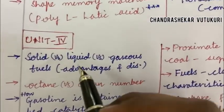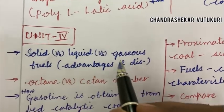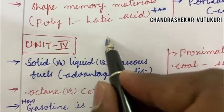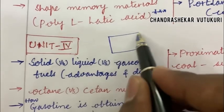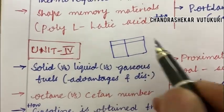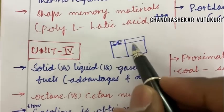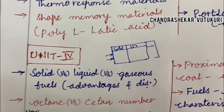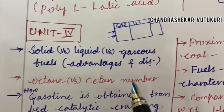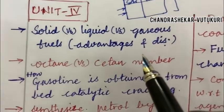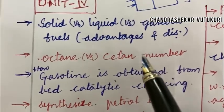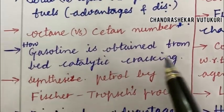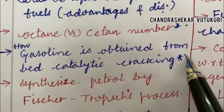Let us jump into Unit 4. It is all about solid versus liquid versus gaseous fuels — their differences, advantages, and disadvantages. Dear students, when a question related to comparison is given, you are supposed to work out in tabular column form and write the solids, liquids, and gaseous fuels in point-wise form. Do not write your answers in a paragraph — use good quality pens and write in bullet points only. Octane versus cetane number, their differences, how gasoline is obtained from petroleum, and catalytic cracking is said to be a topmost question.